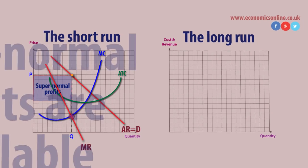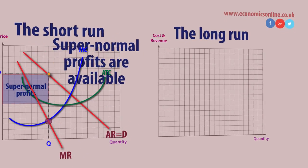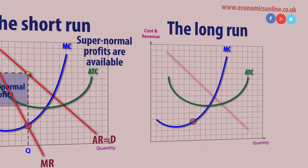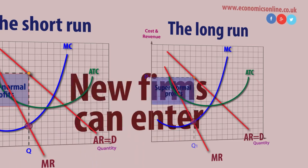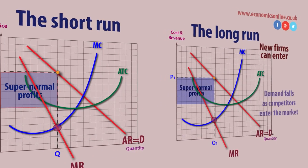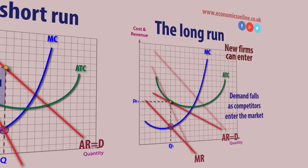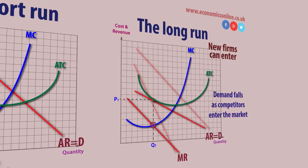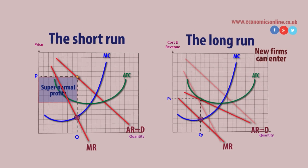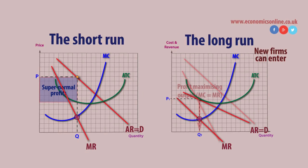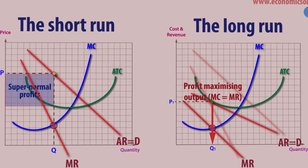In the long run, new firms enter the market selling cheaper, better, or newer products, or they offer some other distinguishing feature. This pushes down the firm's average revenue curve and makes the curve more elastic, as there are now more choices for the consumer. Normal profits occur when total revenue equals total costs. This provides the incentive for the firm to innovate, to keep ahead of rivals and make super normal profits.